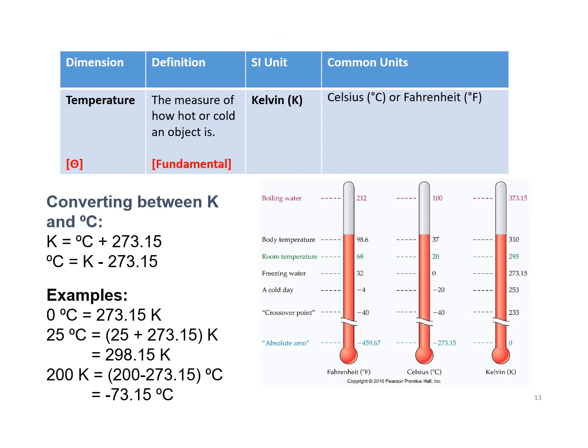Temperature is fundamental. Converting between Kelvin and Celsius or centigrade is just the addition or subtraction of the constant 273.15.